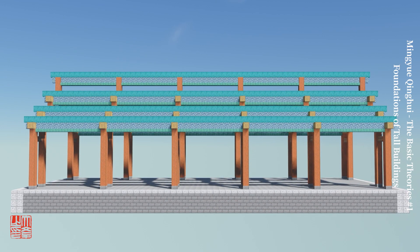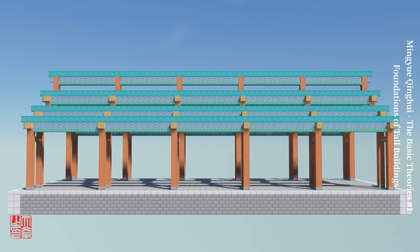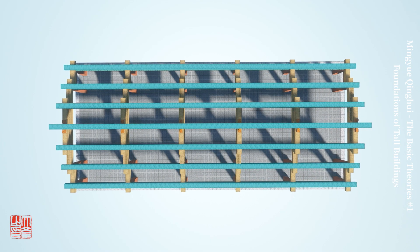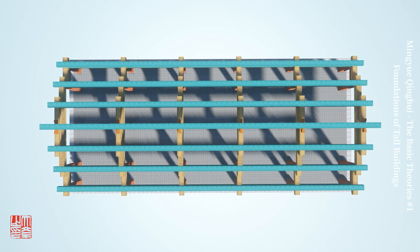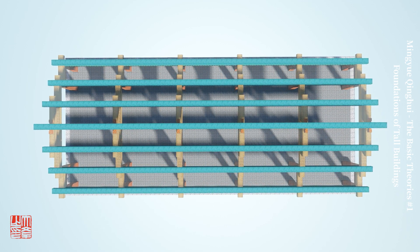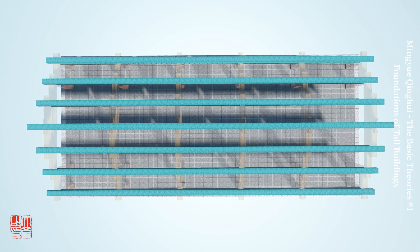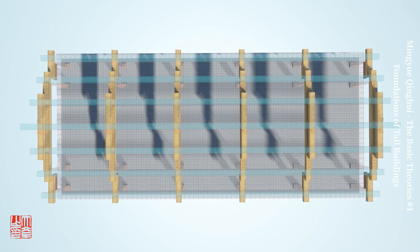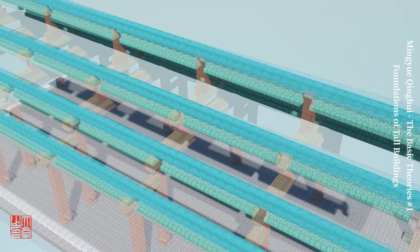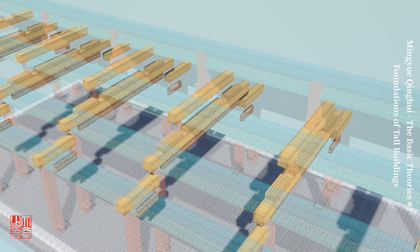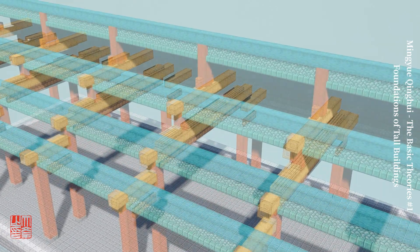The entire wooden structure is formed by the interweaving of horizontal and vertical wooden components, creating a dazzling yet orderly part. The wooden components can be divided into two categories based on their orientation in the plan: those parallel to the width of the building, and those perpendicular to it. The components parallel to the width are always supported by the ones perpendicular to it.